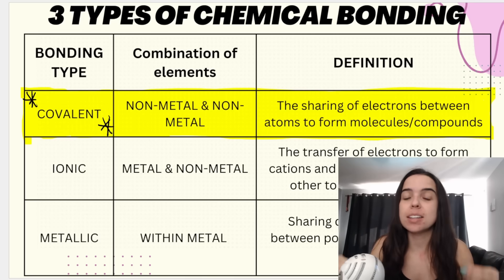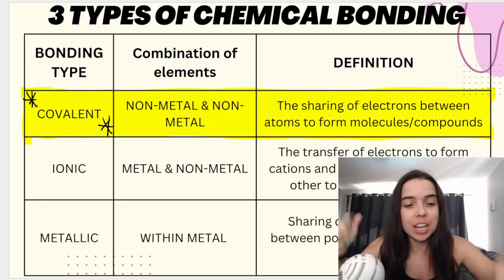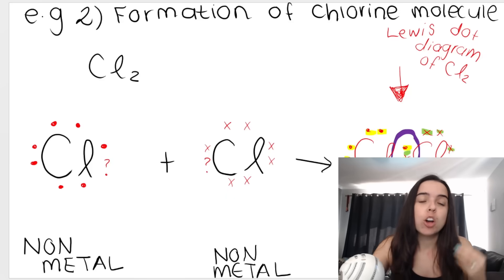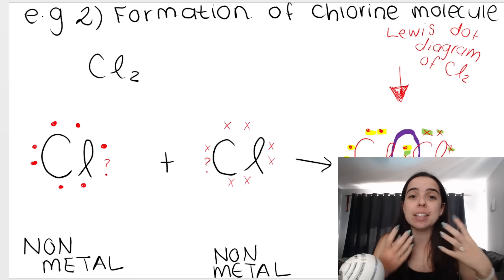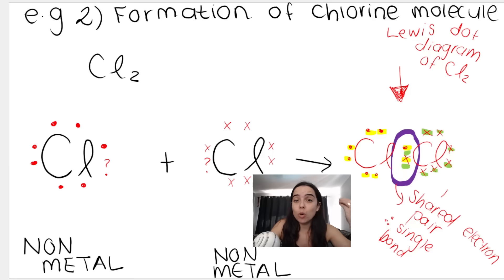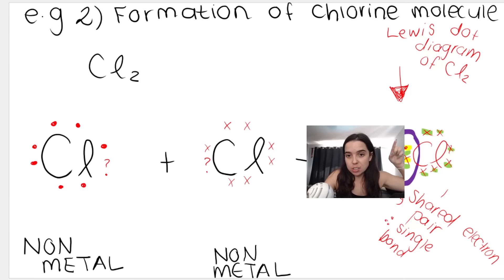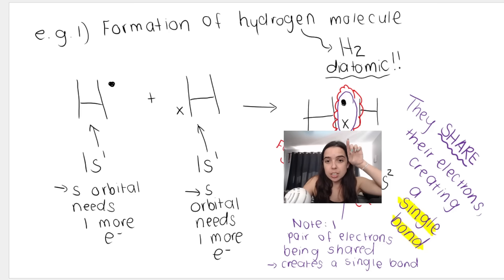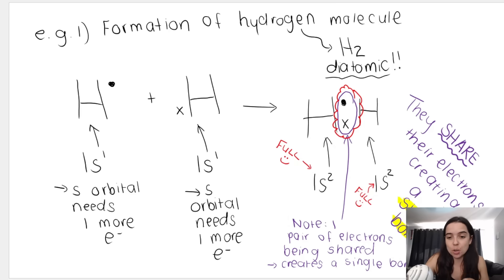In previous videos in this playlist, we discussed the different types of chemical bonding, and in particular covalent bonding — what it is, the definition, and how to represent it using Lewis dot diagrams. We focused on compounds or molecules that have single bonds, meaning they share one pair of electrons. For example, the chlorine molecule and hydrogen both show one pair of shared electrons, creating a single bond. If you missed those videos, check out the links in the description box below. But in this video, we're going to be focusing on multiple bonds.